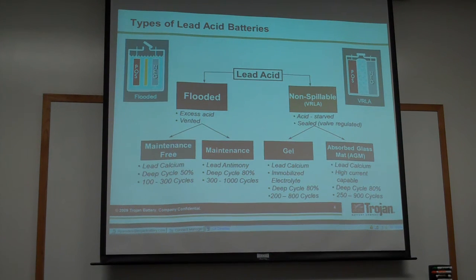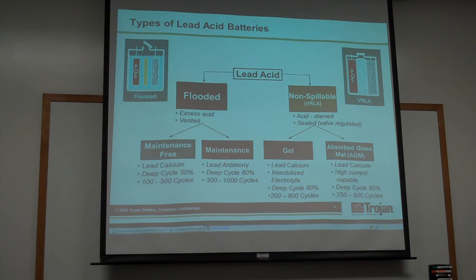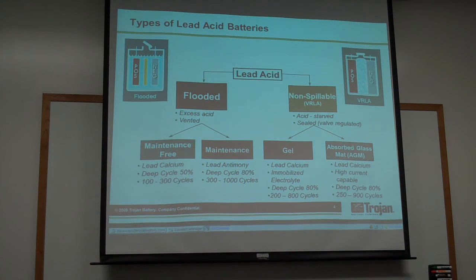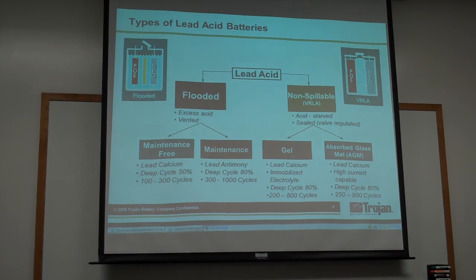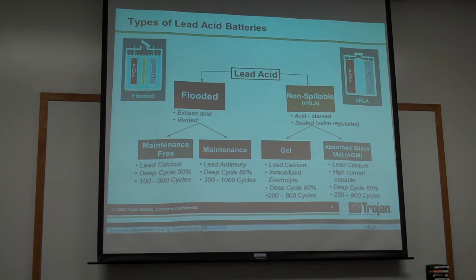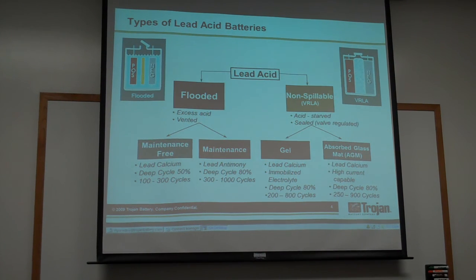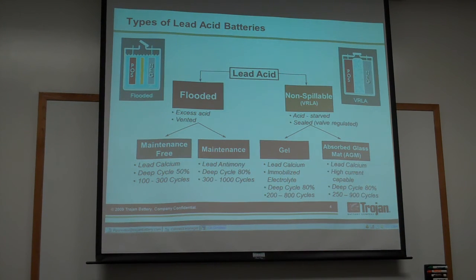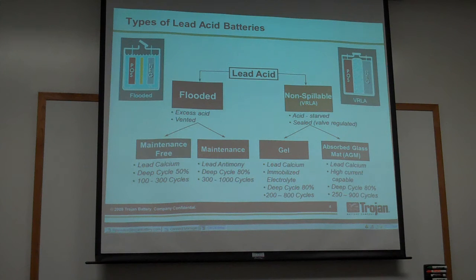There are two broad categories in lead acid batteries. One of them is a flooded, vented battery, where the electrolyte is mobilized. And then the second type is what is commonly called a sealed battery, where the electrolyte is immobilized. Within the sealed world, you have a type of battery called an AGM, and then a gel battery. Both of those are sealed batteries. The AGM stands for absorbent glass mat, and in the case of the gel battery, it's called a gel battery because the electrolyte is gelled with a combination of silica.